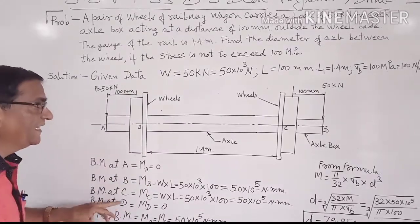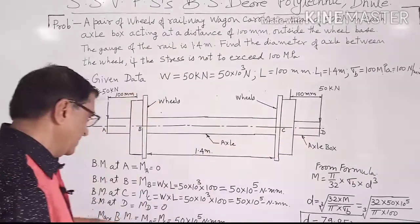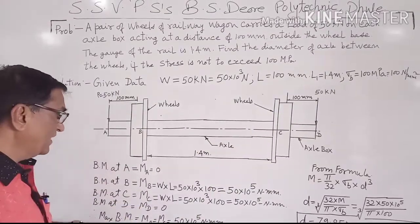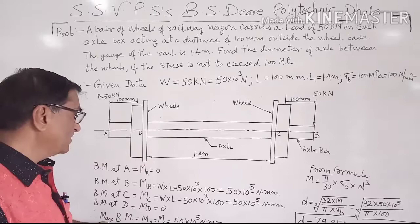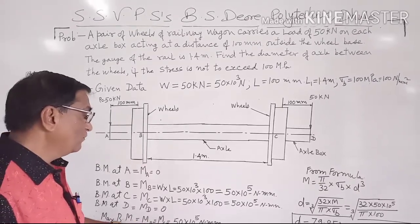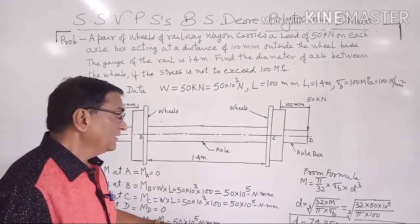Bending moment at D, that comes out to be 0. So the maximum value of bending moment is at B and C. MB equal to MC, that is equal to 50 into 10 raise to 5 Newton millimeter.